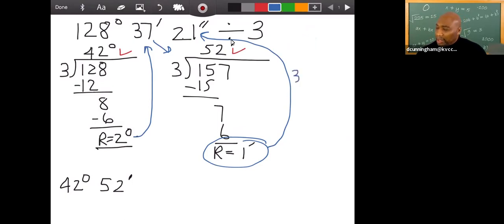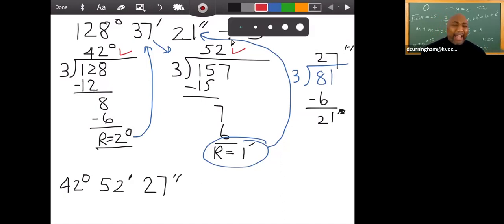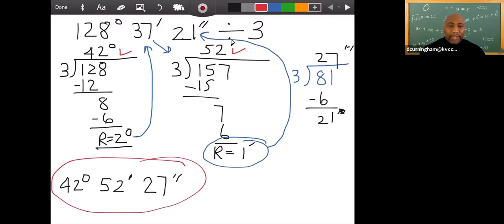So now what I'm going to do, I'm going to say three goes into 81. So three goes in two times, that is six. Bring down the one, that's 27, and that 27 in that case is seconds. Now my remainder is 21, but since that is our seconds we're just going to work with the whole number which is 27 and then put seconds. We don't have to use the remainder. So our answer when we divide by three for each of those units is 42 degrees, 52 minutes, 27 seconds.